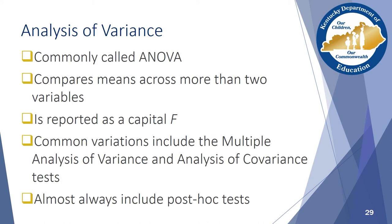The ANOVA test can tell you whether or not a relationship exists between variables, but it cannot tell you where those relationships lie. For that, researchers must deploy one of a variety of post-hoc, or after-the-fact, tests to identify the specific relationship between variables.